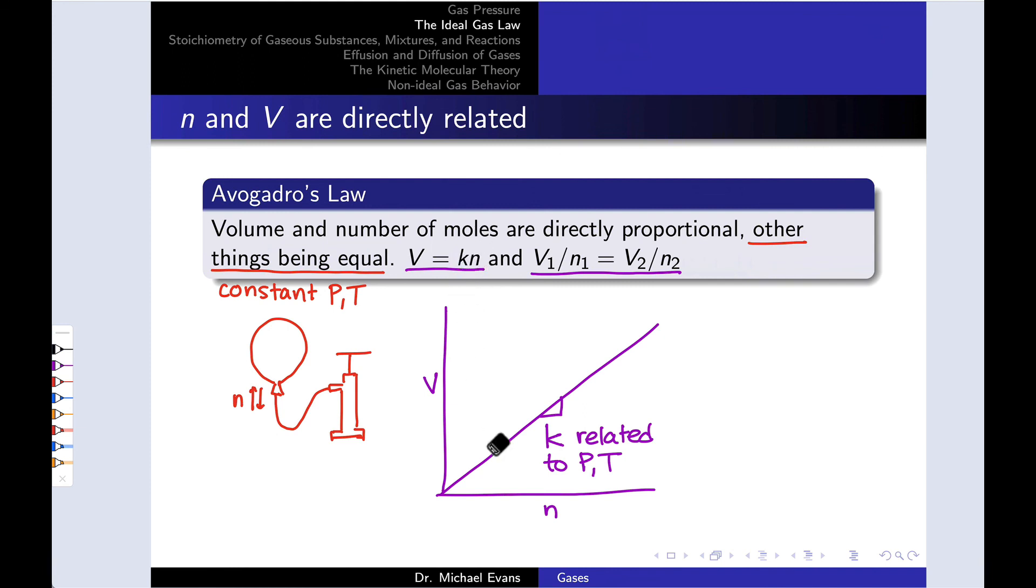V equals K times n. K is that constant of proportionality and is the slope of this line on the graph. The multi-state form uses the idea that V divided by n is equal to a constant K, so V1 divided by n1 must equal V2 divided by n2. This is called Avogadro's Law and was actually instrumental in Avogadro's observations that led to his theory that matter is made up of small atoms and molecules.